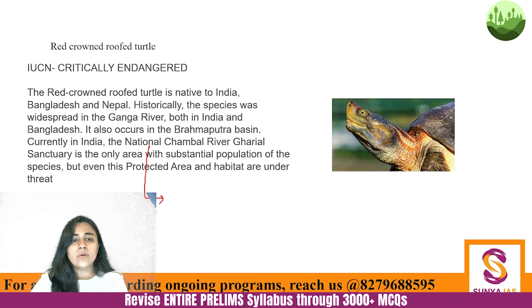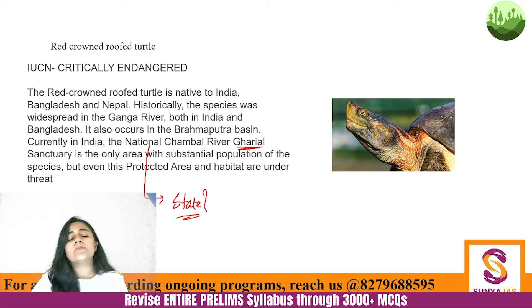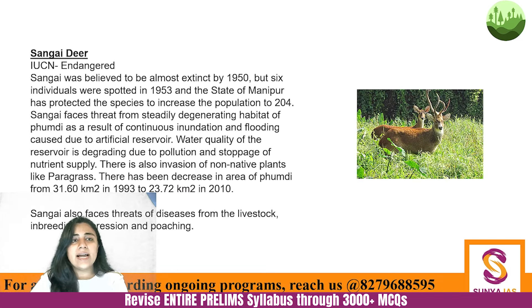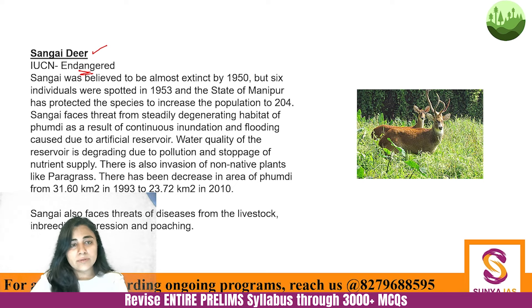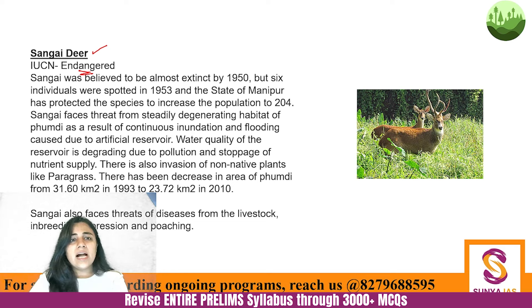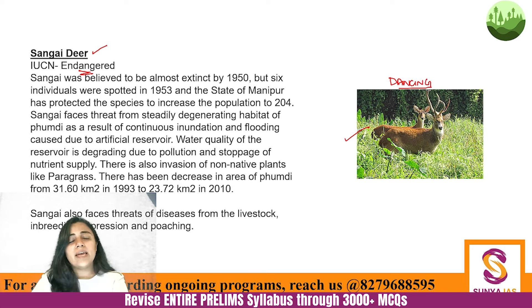In the comments, tell me which state the National Chambal River Gharial Sanctuary is found in — and the Gharial itself is a critically endangered species. Next, Sangai Deer: in a previous class I mistakenly mentioned that Sangai Deer is critically endangered — that is incorrect. The IUCN status of Sangai Deer is endangered, not critically endangered. Please correct it — I have mentioned this in the comments of that video as well.